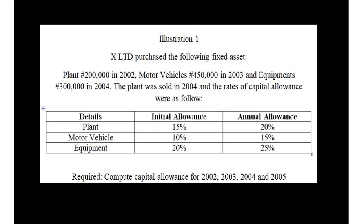We have the following rates of allowances — initial allowance and annual allowance for all the assets purchased. These rates of allowances may be given in the question or not. The tax laws have all these rates and you should know them, in case they are not shown in the question paper. Since the rates of allowances are given here, we are going to use them to solve the question.